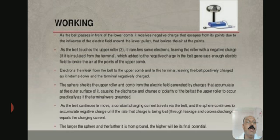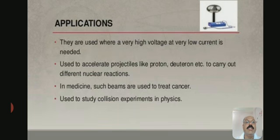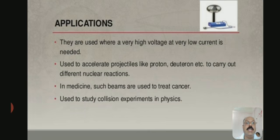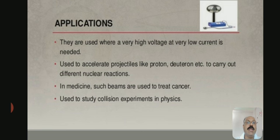This covers the working of the Van de Graaff generator. What are its applications? They are used where a very high voltage at very low current is needed. They are used to accelerate projectiles like protons, deuterons, etc., to carry out different nuclear reactions. The Van de Graaff generator is also used in medicine.